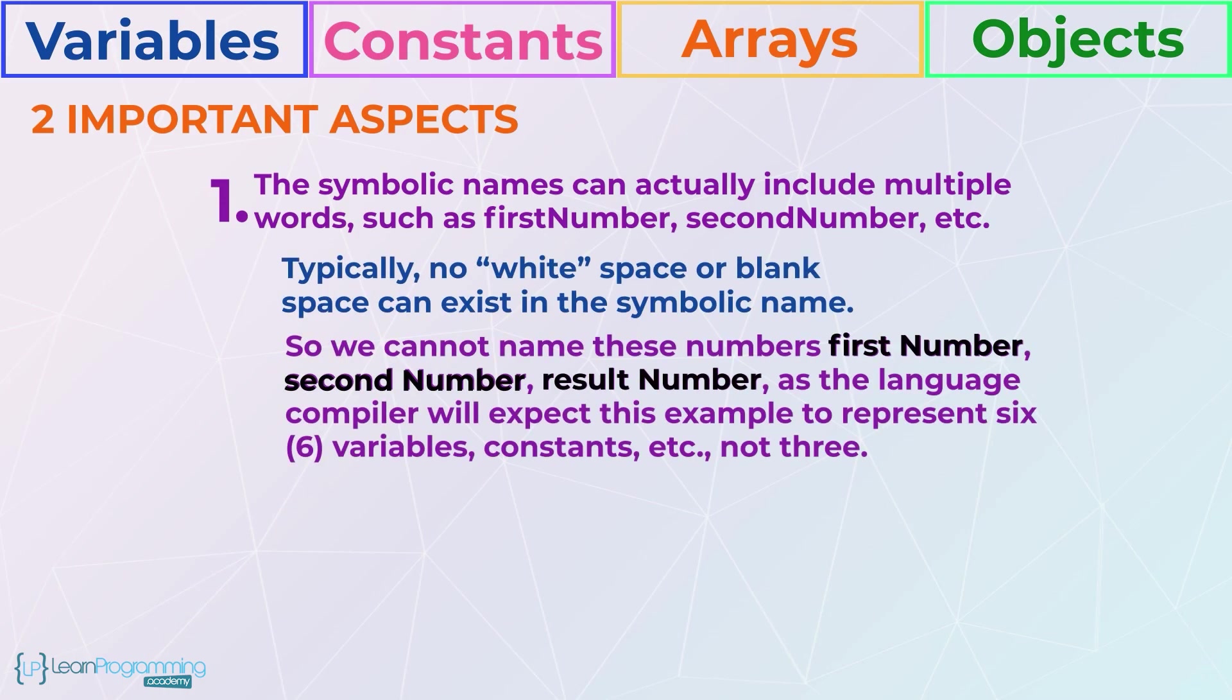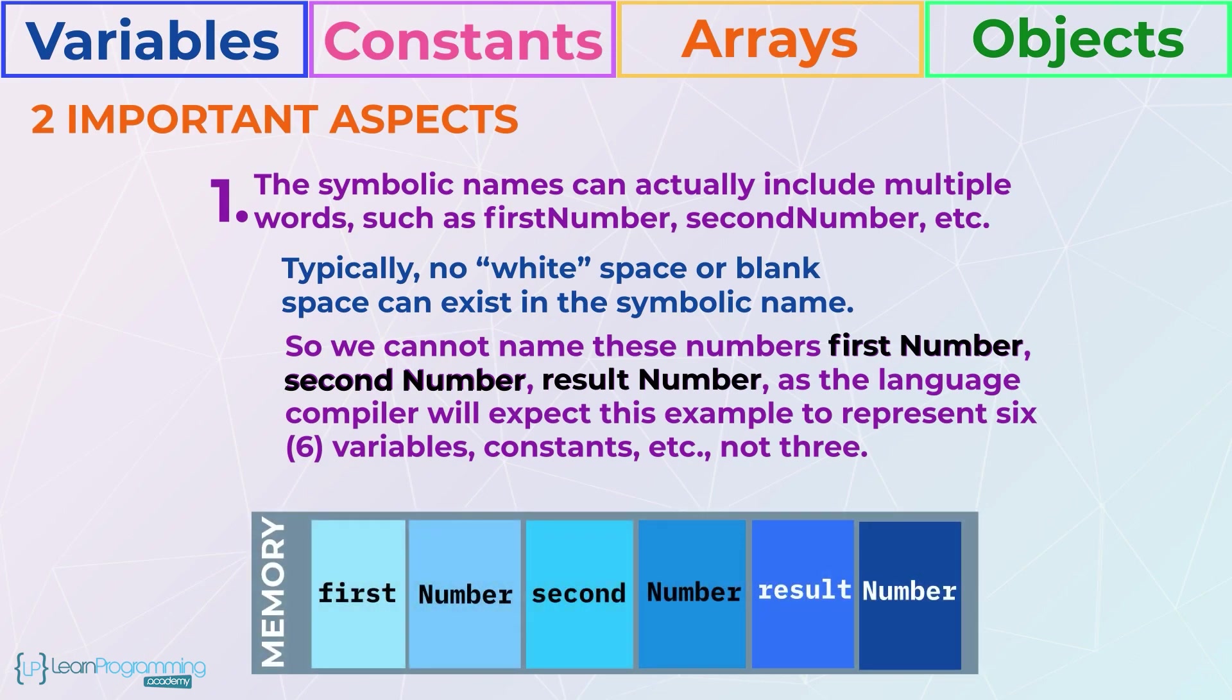But there can be no white space or blank space between the multiple words because the language compiler will think each word is a symbolic name for a memory location, hence we remove the white space between multiple words symbolic names. Make sense? It's a bit strange but programmers are very used to it.